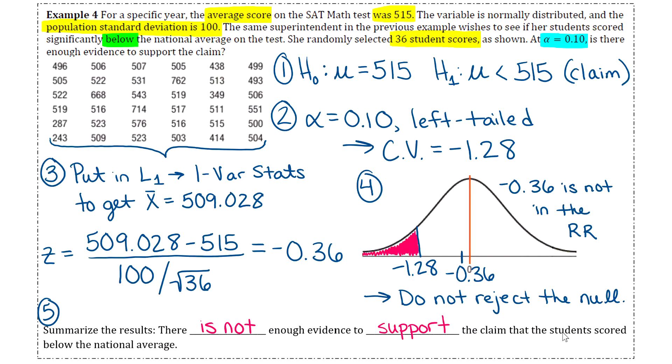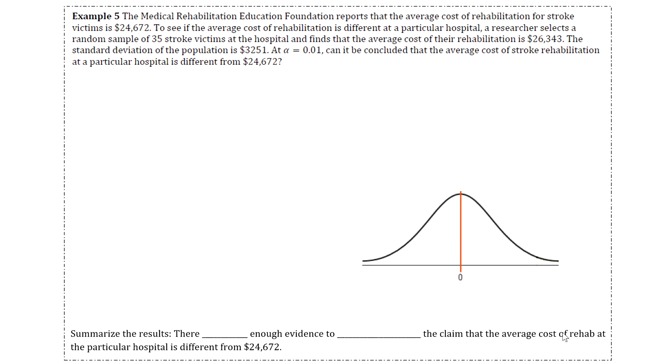Okay, so let's do one more example. Hopefully by now you're getting the hang of it and you see that it's not too bad. So example five says that the Medical Rehab Education Foundation reports that the average cost of rehabilitation for stroke victims is $24,672. To see if the average cost of rehab is different at a particular hospital, a researcher selects a random sample of 35 stroke victims at the hospital and finds that the average cost of their rehab is $26,343. The standard deviation of the population is 3,251. Alpha is 0.01. Can it be concluded that the average cost of stroke rehab at a particular hospital is different from $24,672?